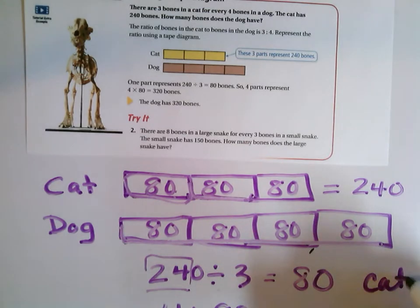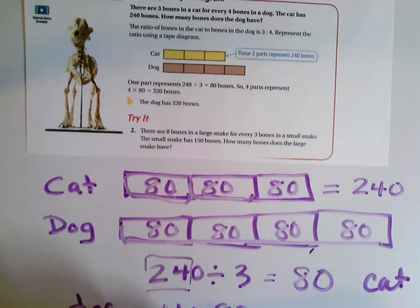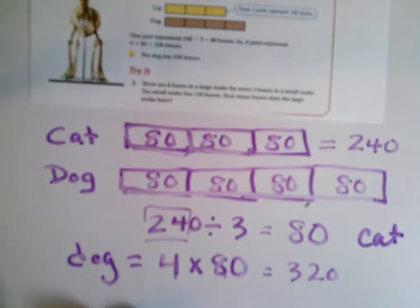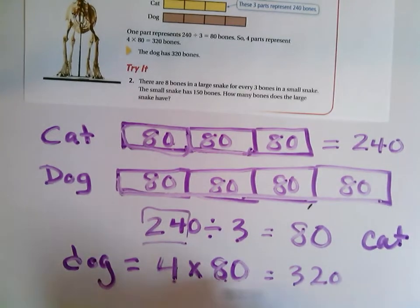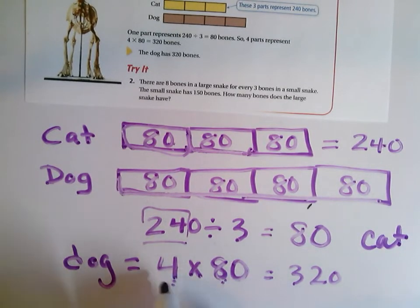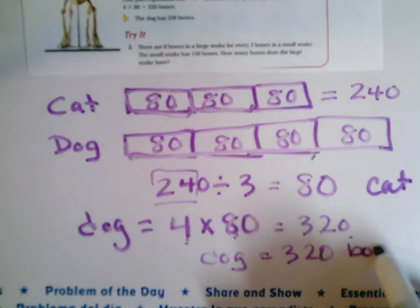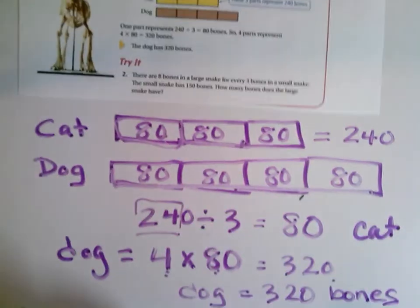This is the cat, right? So I'm going to find out the dog. Four times 80. Four times eight is 32. Oops, four times eight is 32. I do that all the time, guys. I'm so sorry. Four times eight is 32, so four times 80 is 320. So the dog has 320 bones.